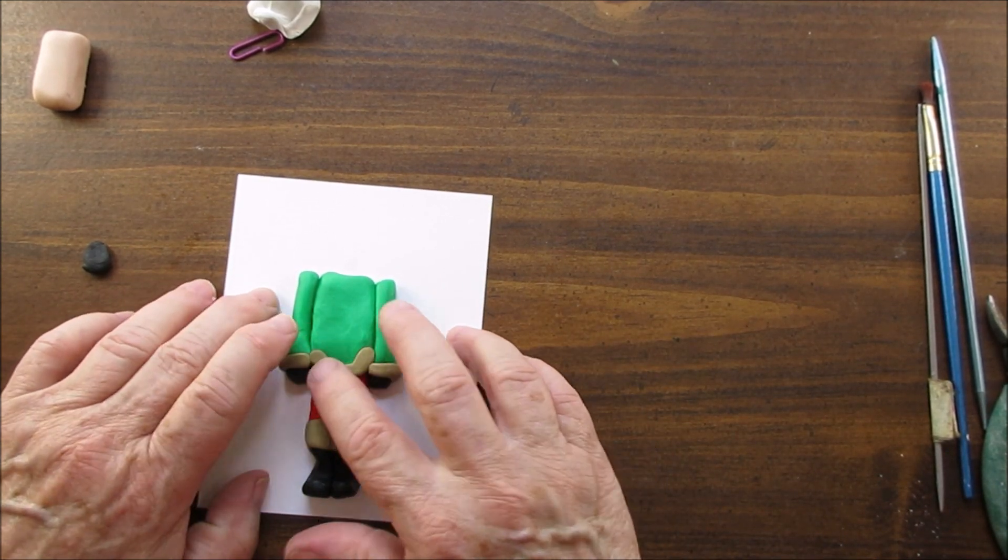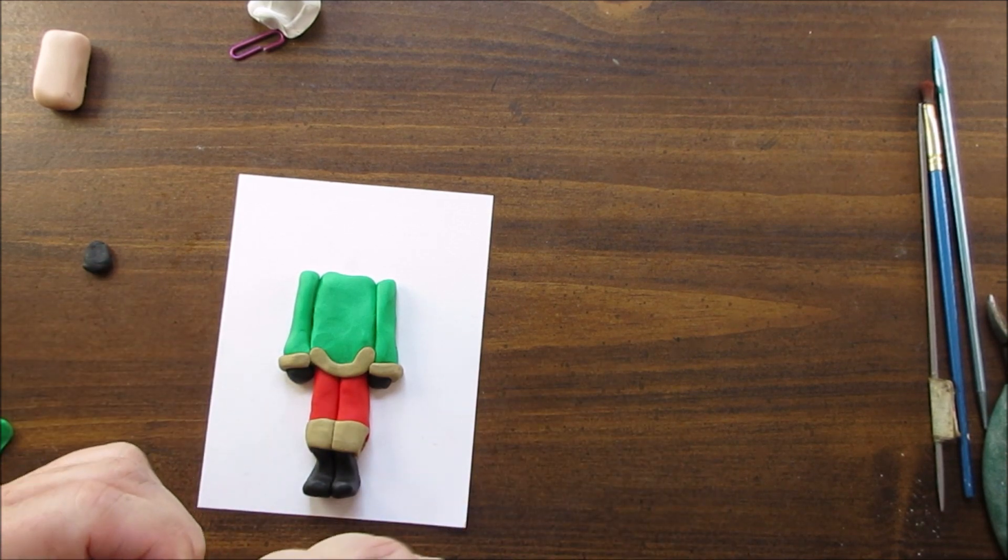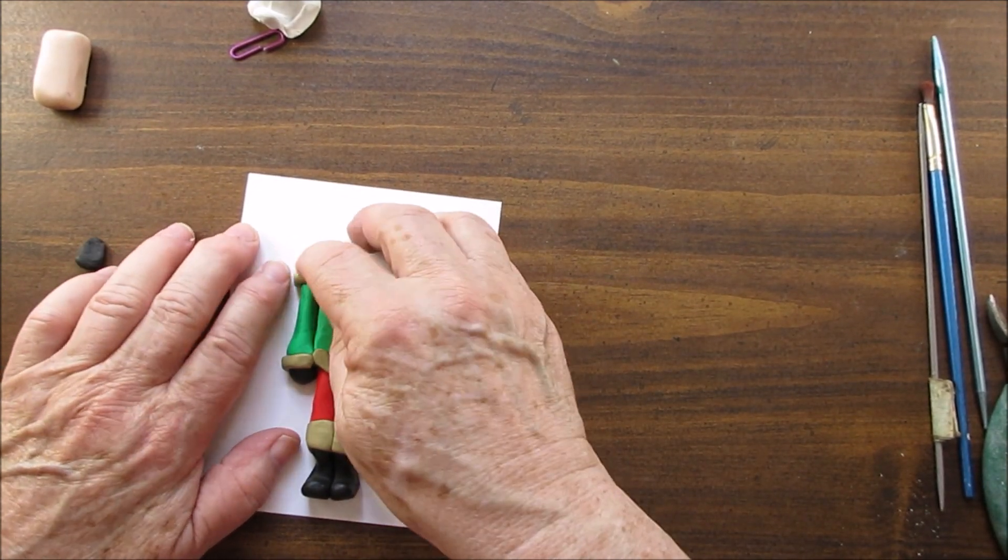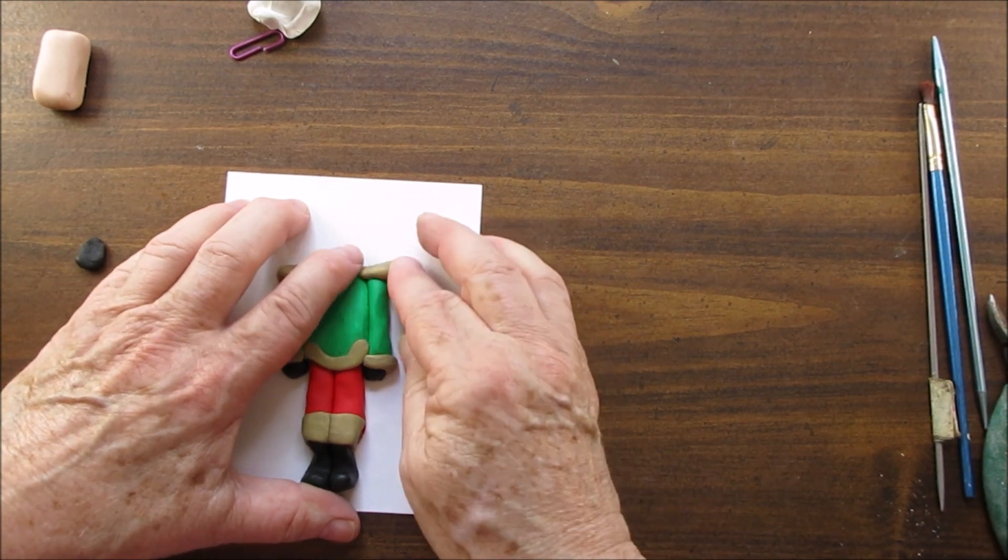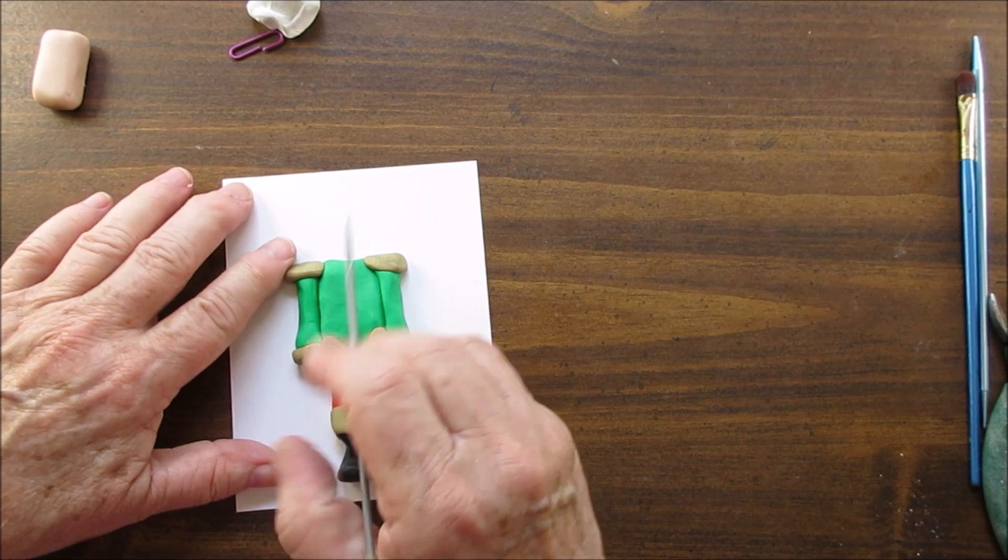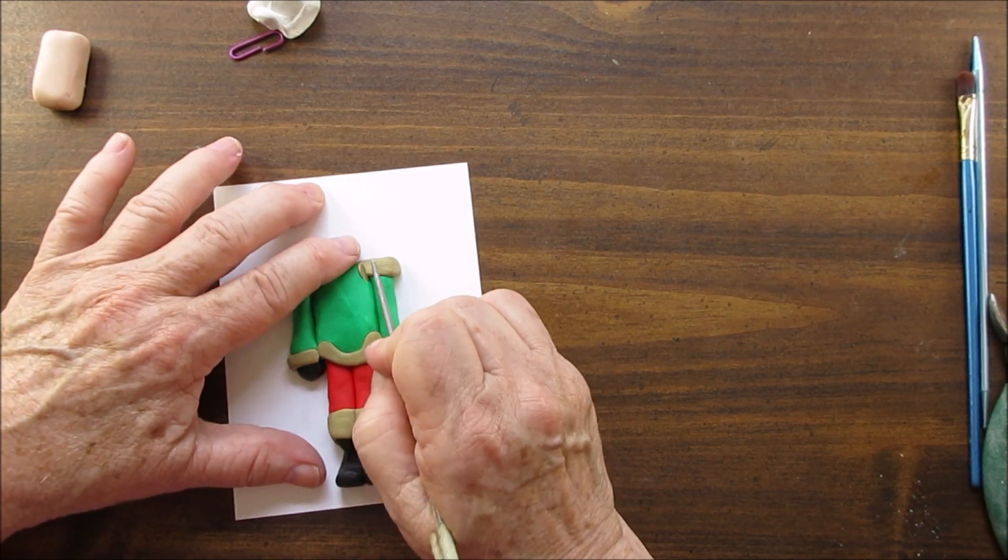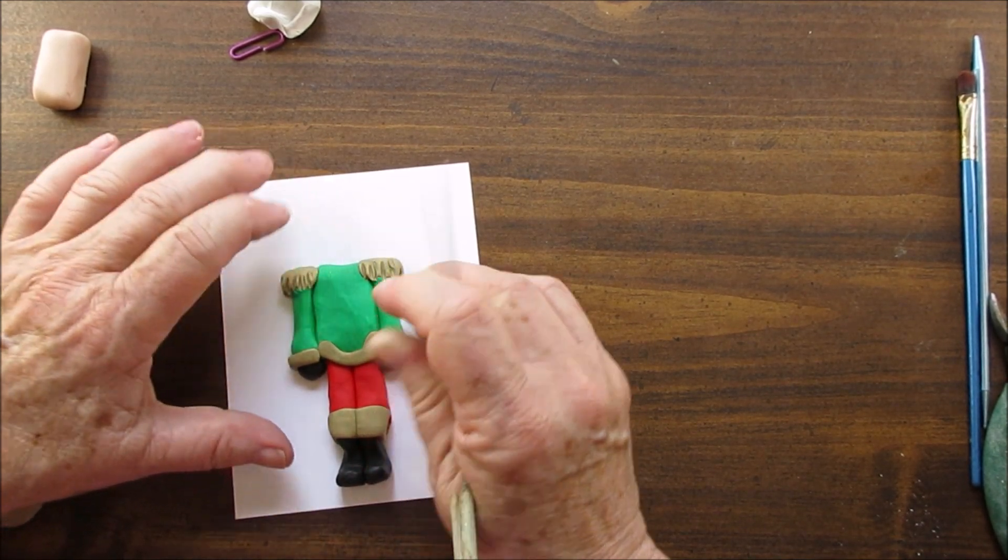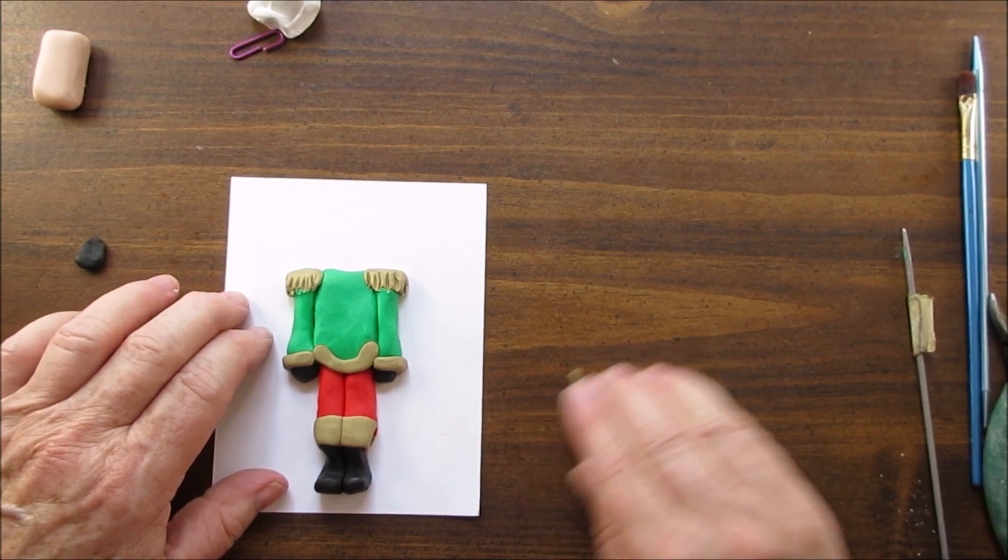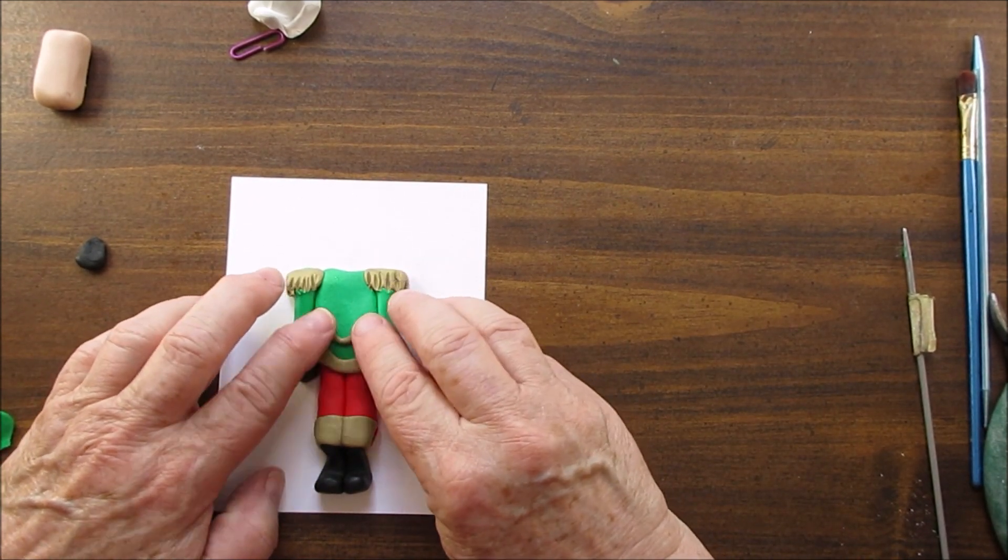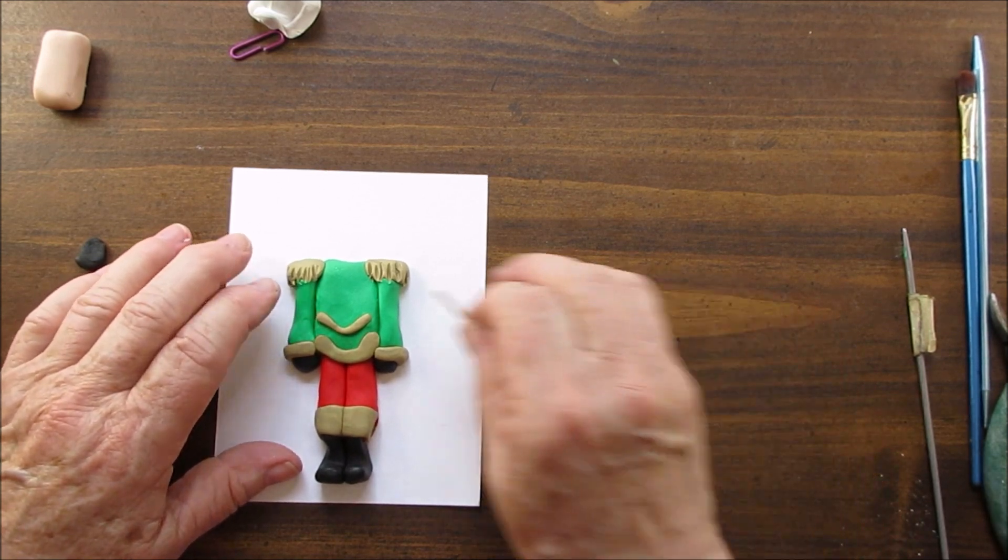Now we're making the cuffs. This is a different gold than Sculpey had before, I think I like the other gold better. I am literally sitting on my hands so I don't talk with them. You can pretty much see what I'm doing, I don't have to explain every little bit to you.